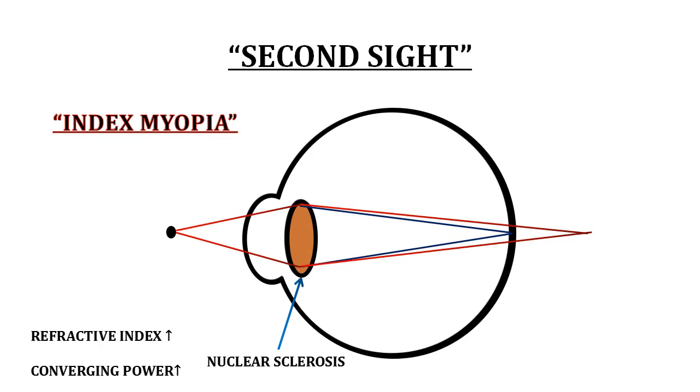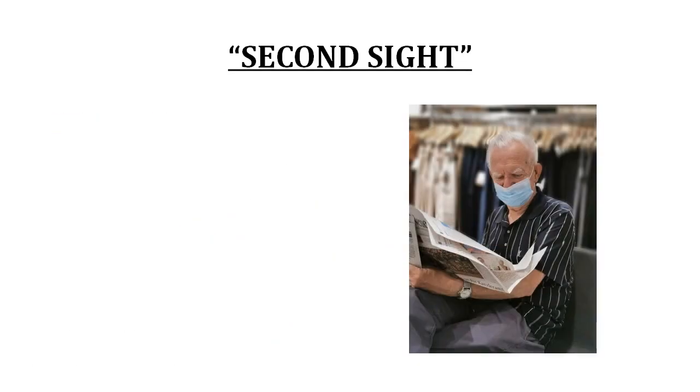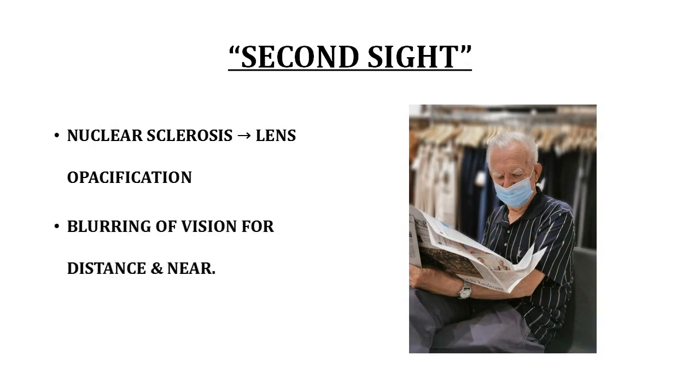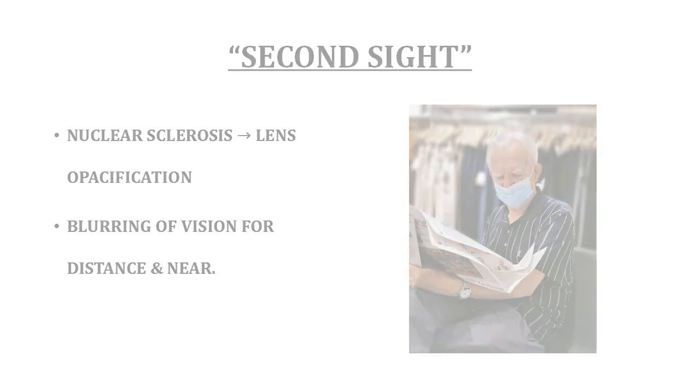What is important to note here is that, though this index myopia has improved his near vision, his distance vision is now blurred because of nuclear sclerosis induced myopia. Also, second sight is a temporary phase because eventually this nuclear sclerosis progresses to lens opacification and then the patient experiences blurring of vision for both distance as well as near.